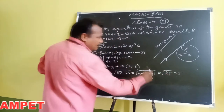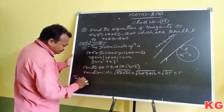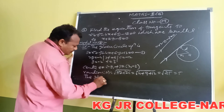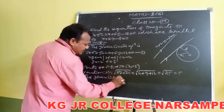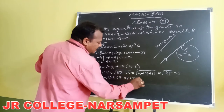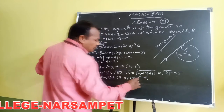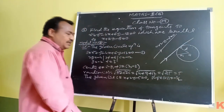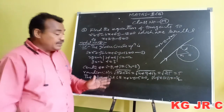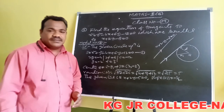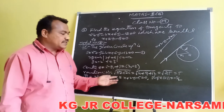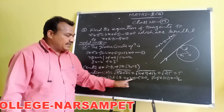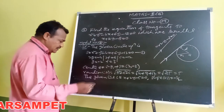Now we have to find out the tangent. The equation of the given line L is equal to x plus 2y minus 1. The slope of this line: M is equal to minus 1 by 2. We remember this — the slope of the line in the form Ax plus By plus C is minus the x coefficient by the y coefficient. Here x coefficient is 1, y coefficient is 2, so M equals minus 1 by 2.